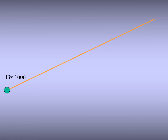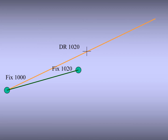Let's take another example. You know your fixed position at 10:00, and you want to reach a certain point — the cross — by 10:20, after 20 minutes. That cross is your DR or estimated position. However, after 20 minutes you find you have actually reached a different position, denoted by the green circle — your actual fixed position. You did not reach where you expected. The line from your 10:00 position to your actual 10:20 position shows the course and speed made good over the last 20 minutes.